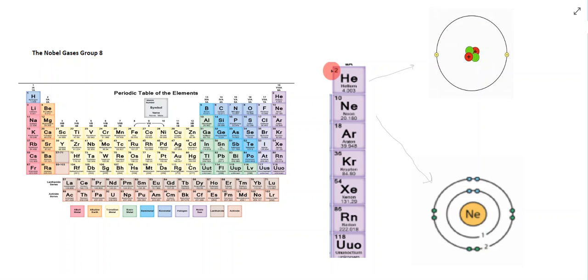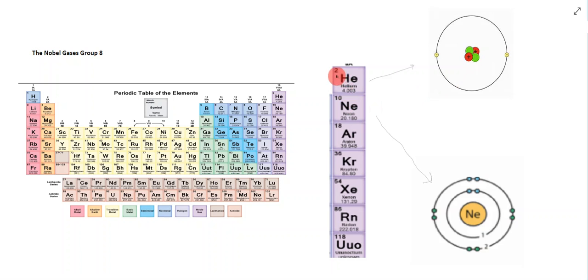Helium's atomic number is two, and the atomic number represents the number of protons present in the nucleus — the positively charged subatomic particles. In the Bohr structure of helium, the two red circles represent the protons, and the green circle represents two neutrons. Adding protons and neutrons gives a mass number of four, which we can see on the periodic table. Since helium has two protons, it also has two electrons in its outer shell.